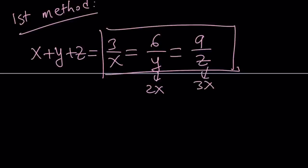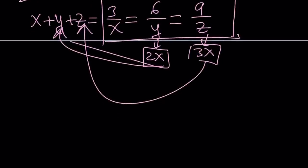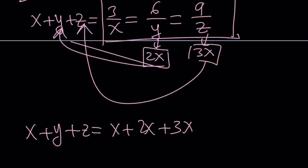So now from here, what do we get? We get something nice, because we can go ahead and plug these in here. x plus y plus z equals x plus 2x plus 3x. That is x plus y plus z, and that is also equal to 3 over x. The reason why I use that one is because everything is in terms of x.